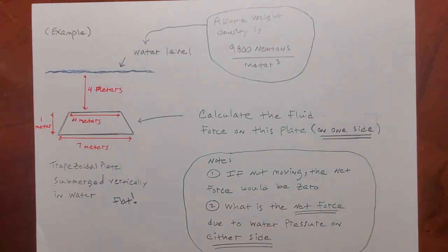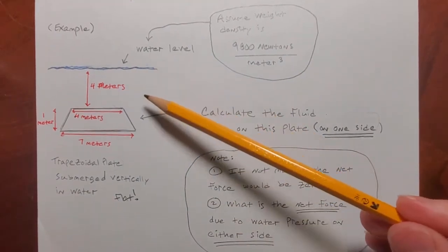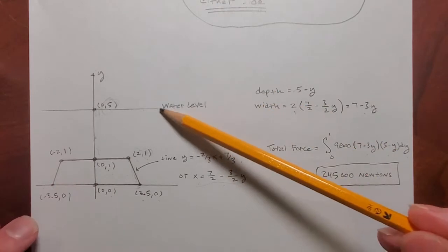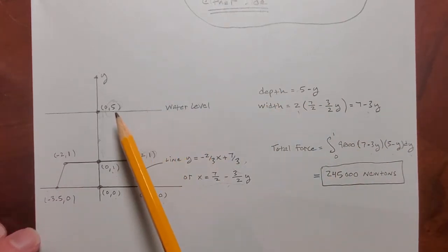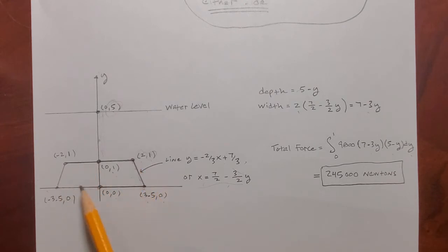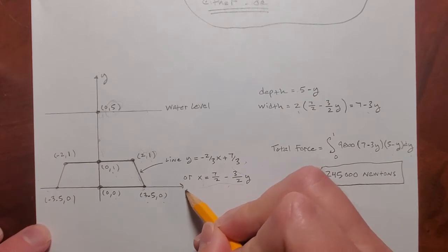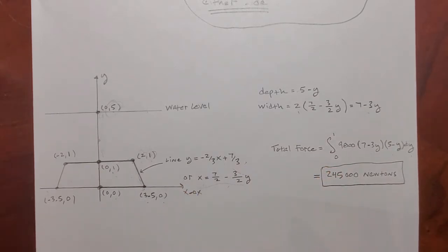So in the other video where I worked this, I took this and I imposed the y-axis on it like that. I put the water level here at 5 and I put the trapezoidal plate down here with its bottom side on the x-axis. So here's the x-axis like so. And that's how I decided to do it. And I got the depth and the width like that.